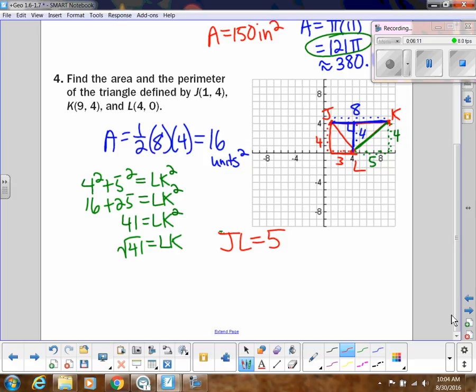Or you could do Pythagorean theorem or distance formula. All right, so my perimeter is going to be 8 plus 5 plus square root of 41. So that's going to be 13 plus the square root of 41. I'm totally okay with you leaving that.